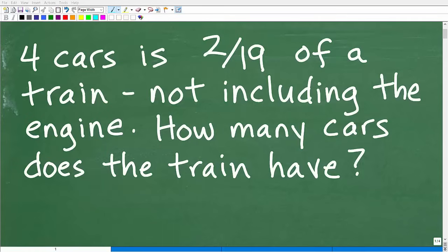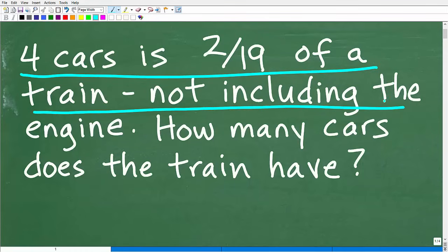Okay, so get ready to put your math skills to work to solve this interesting little math word problem. Matter of fact, let me go ahead and read the problem. It is the following: Four railroad cars is 2/19ths of a train, not including the engine. How many cars does the train have?